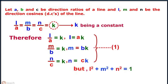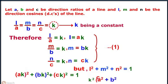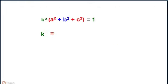But we know that L square plus M square plus N square equals 1. Substituting the values, we get K square into A square plus B square plus C square equals 1. This gives K equals plus minus 1 by under root of A square plus B square plus C square.